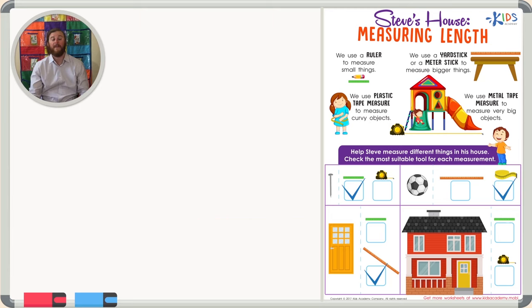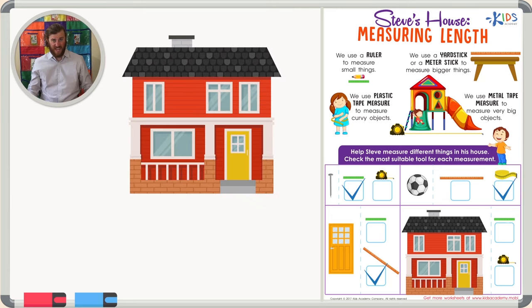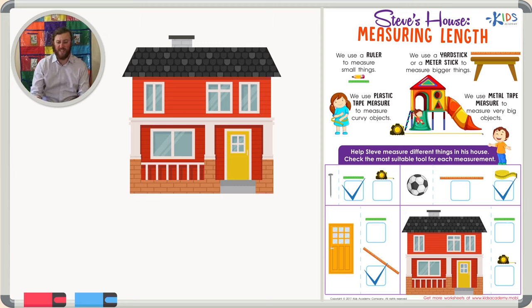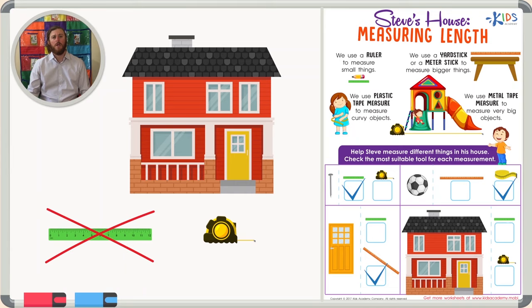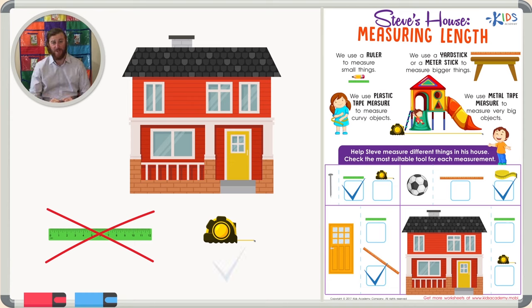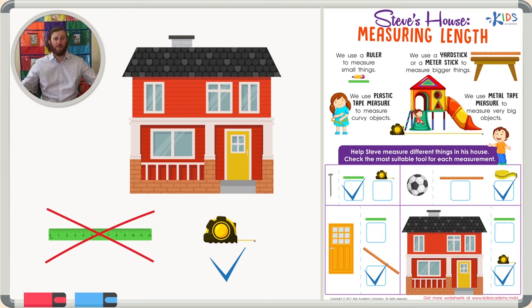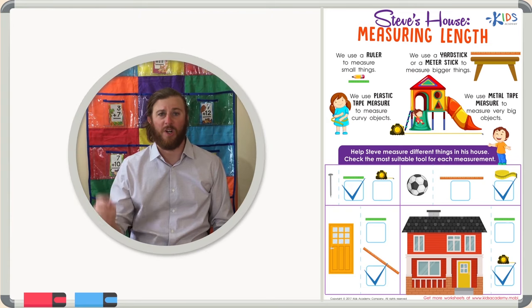Finally we have a house. Our two choices are the ruler and the metal tape measure. If I were to measure this house using the ruler, I would need a lot of rulers. But with just one metal tape measure I might be able to measure the whole house, so the metal tape measure is the appropriate choice here because we can measure distances from 50 to 200 feet long.